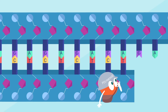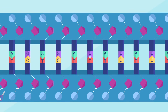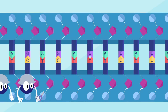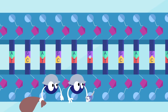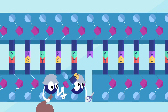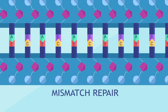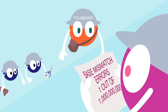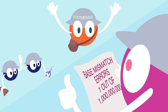And just in case it missed a few, a second set of proteins comes behind it to check. If they find a mismatch, they cut out the incorrect nucleotide and replace it. This is called mismatch repair. Together, these two systems reduce the number of base mismatch errors to about one in one billion.